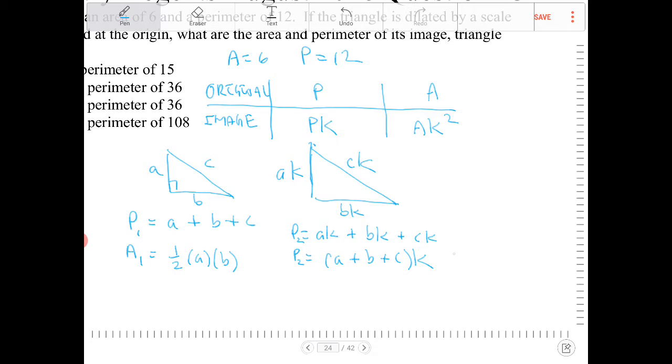You can see that a plus b plus c is really the perimeter of the original, which was P₁. I'm going to do the same thing with the area now. The area A₂ is one-half ak times bk.